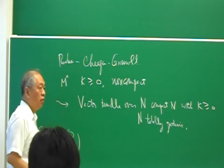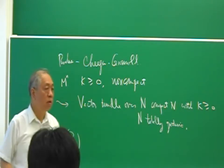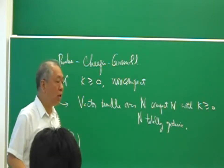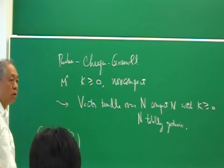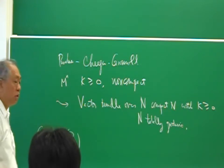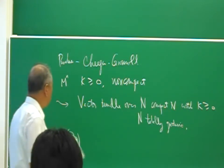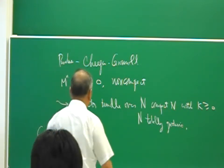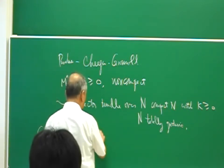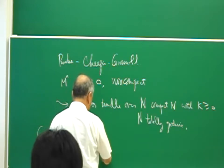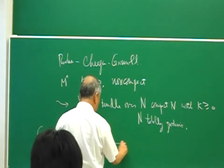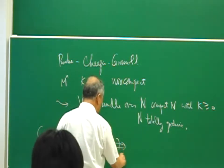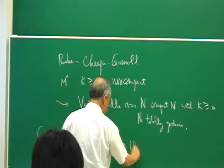Given the vector bundle over a compact manifold, not negative pressure. Some of the time, the total space — V over a manifold — some of the time, the total space.